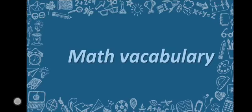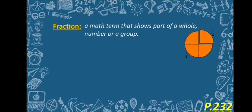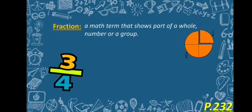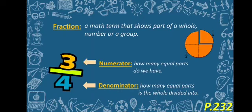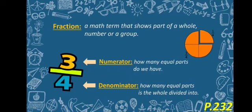The first one is Fraction. A fraction is a math term that shows part of a whole number or a group, like 3 over 4. 4 is the bottom number and it's called the denominator, and it represents how many equal parts the whole is divided into. 3 is the top number and it's called the numerator, and it tells us how many of these equal parts we have.